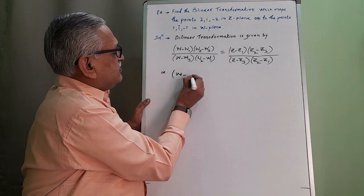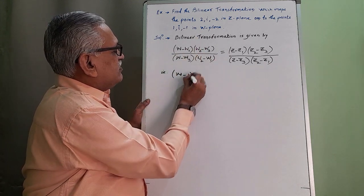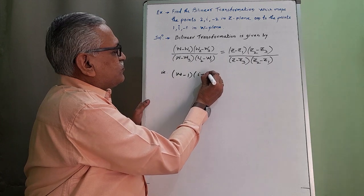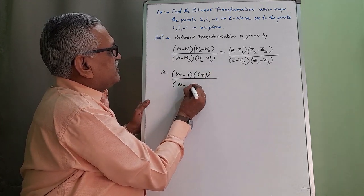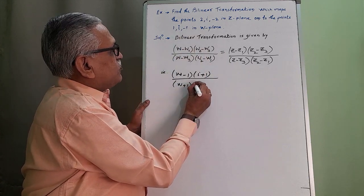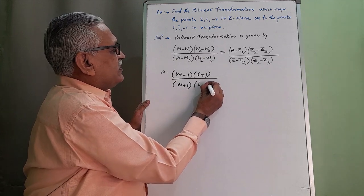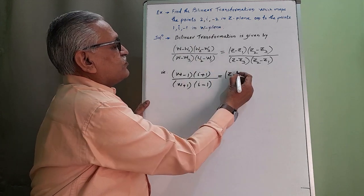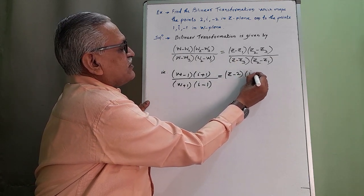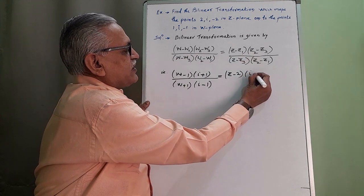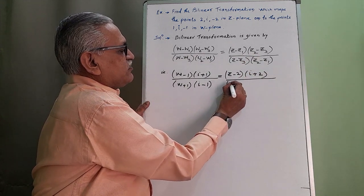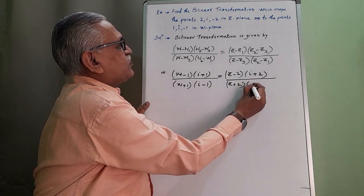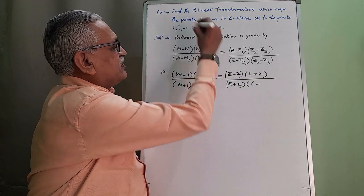We get w minus w1, where w1 is 1, w2 is i, and w3 is minus 1, so minus minus becomes plus 1. Divided by w minus w3, which is minus 1, again minus minus becomes plus 1, and w2 minus w1 is i minus 1. That equals z minus z1, where z1 is 2, z2 is i, z3 is minus 2, therefore it becomes z plus 2, and z2 minus z1 is i minus 2.